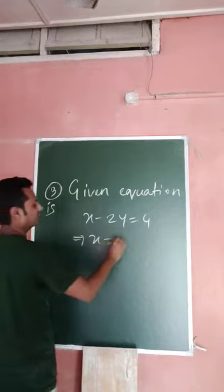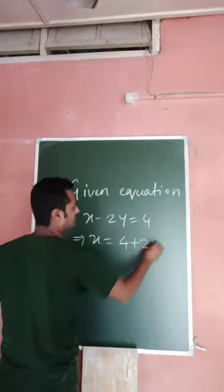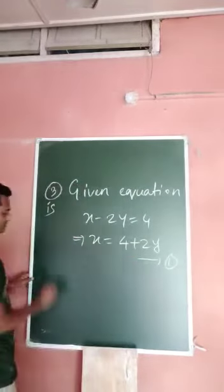From the given equation x minus 2y equal to 4, we get x equal to 4 plus 2y. We can call this equation number 1.